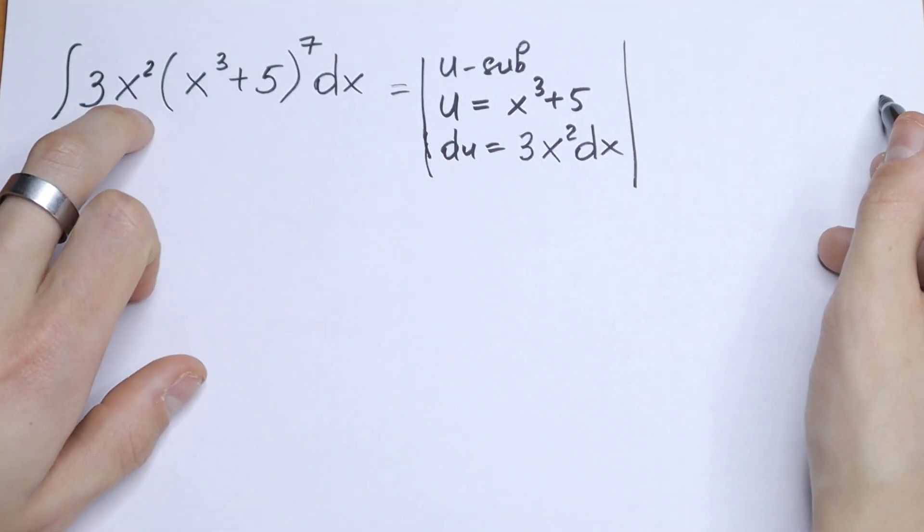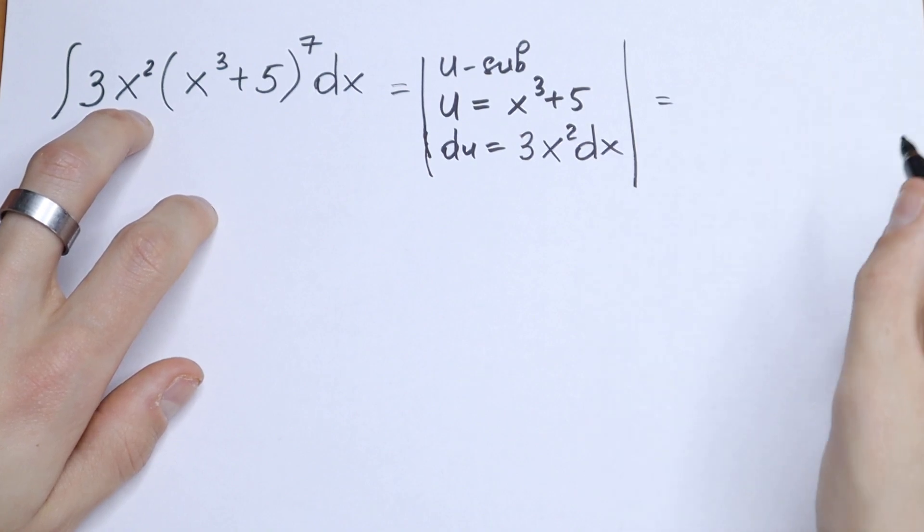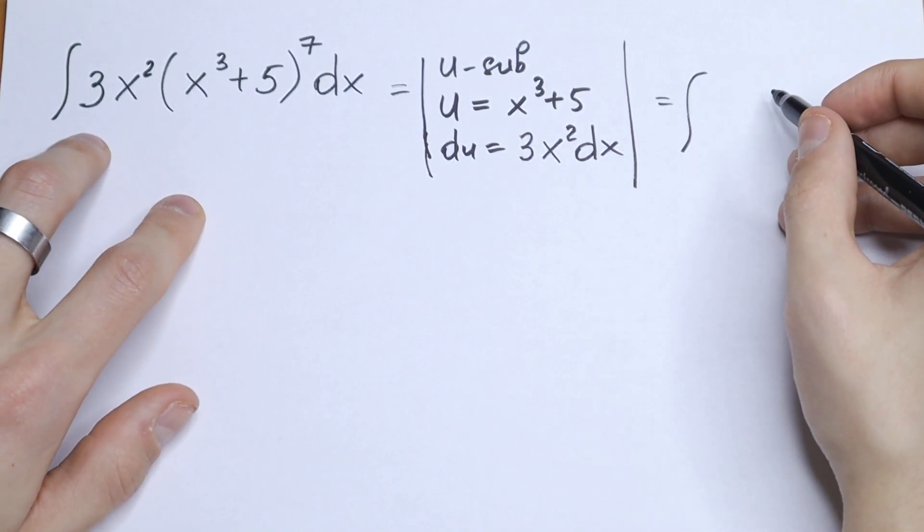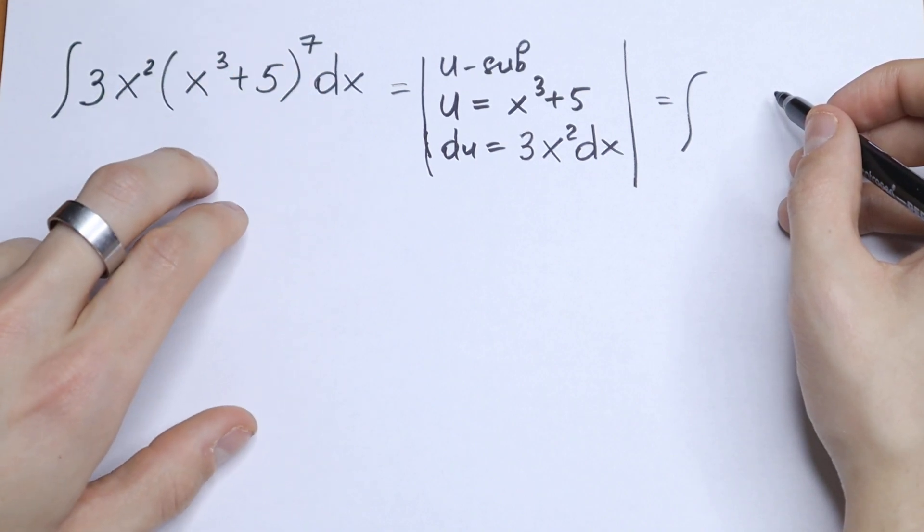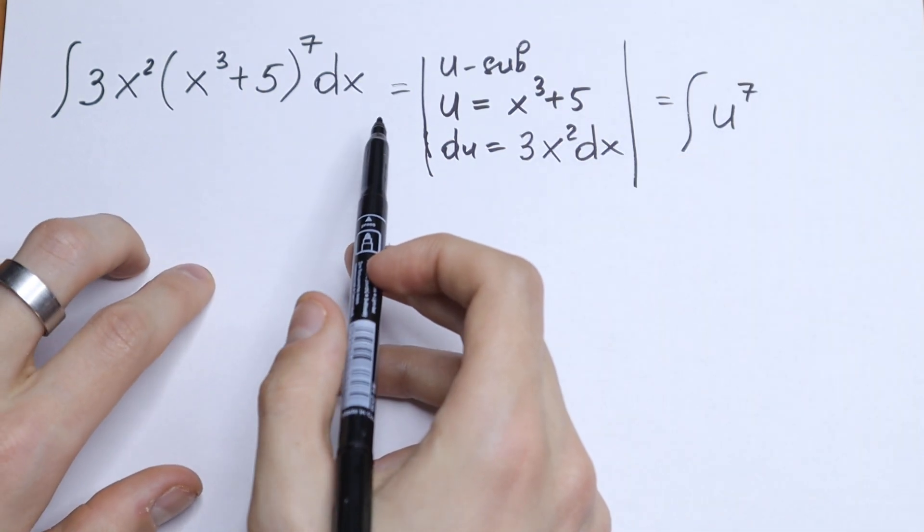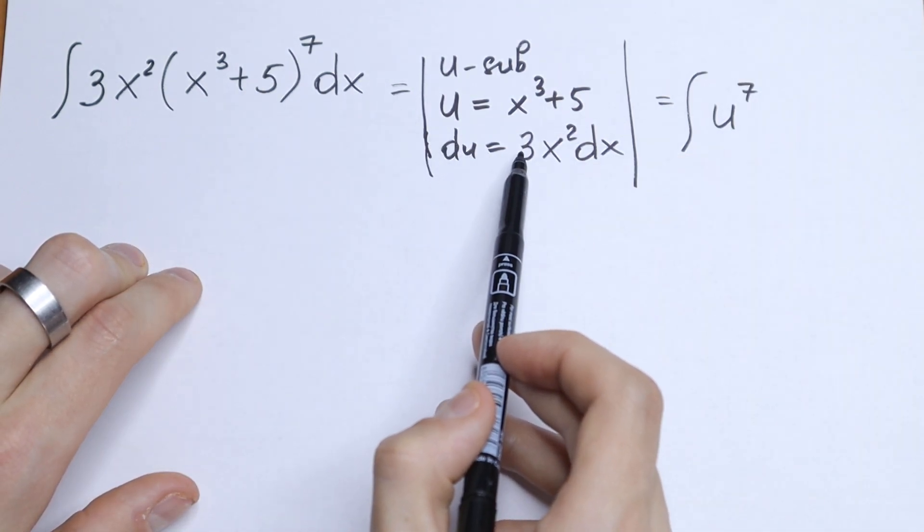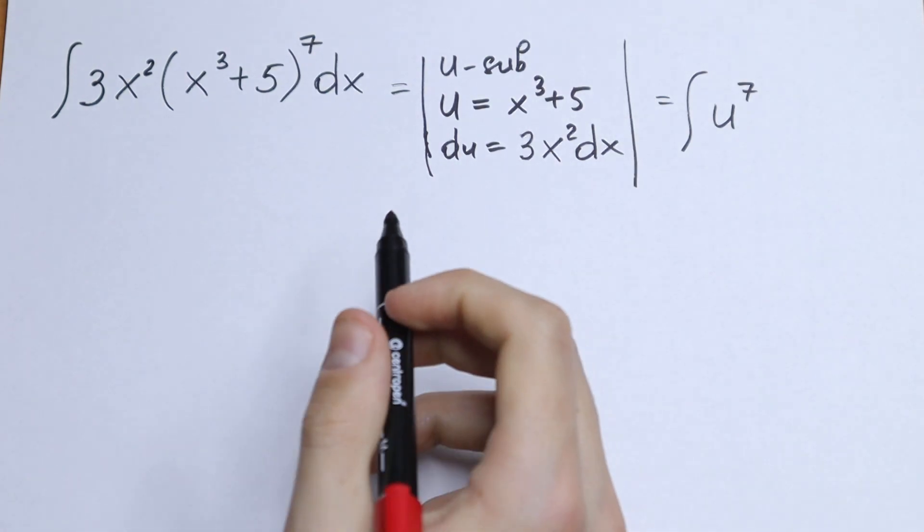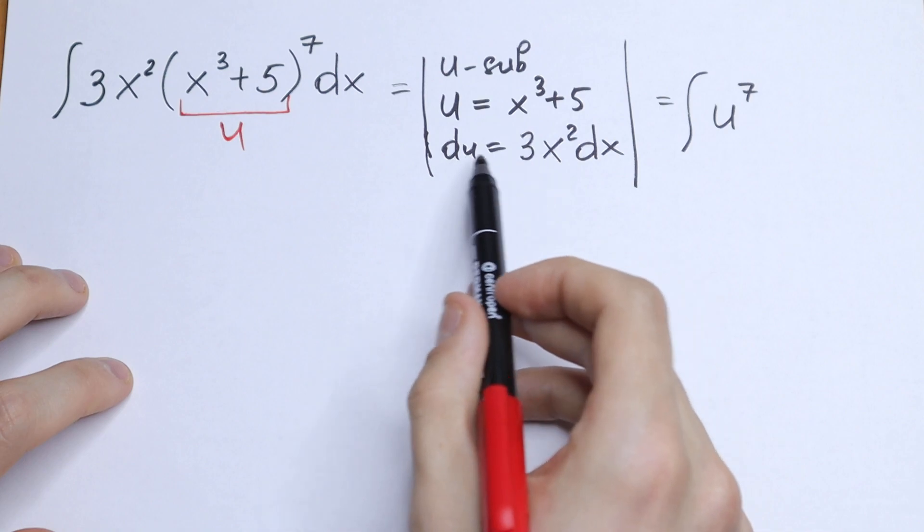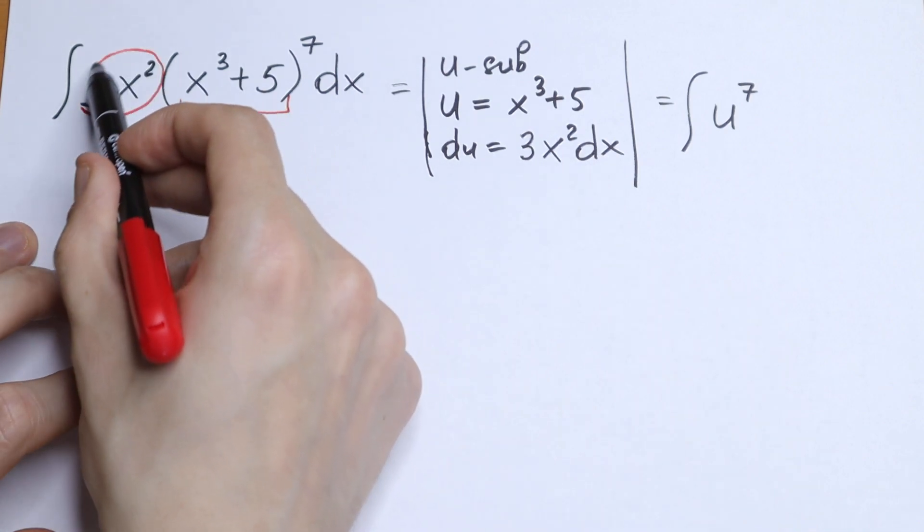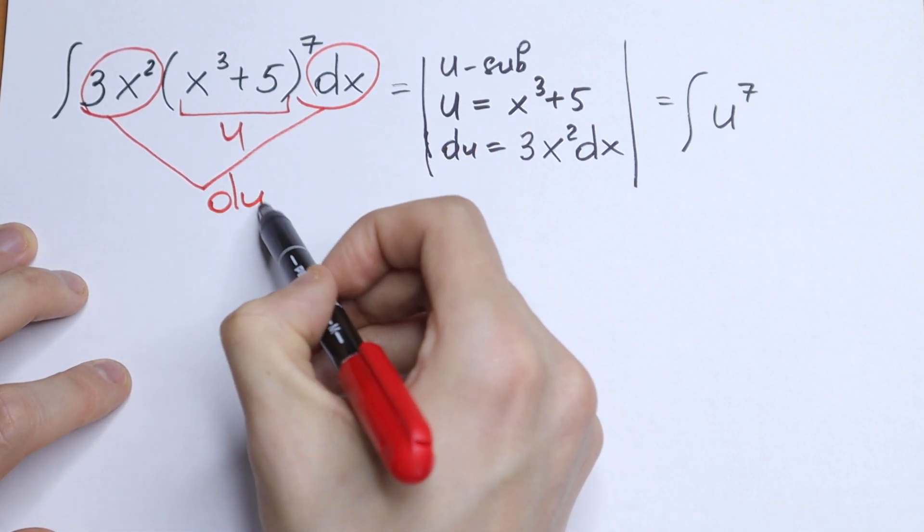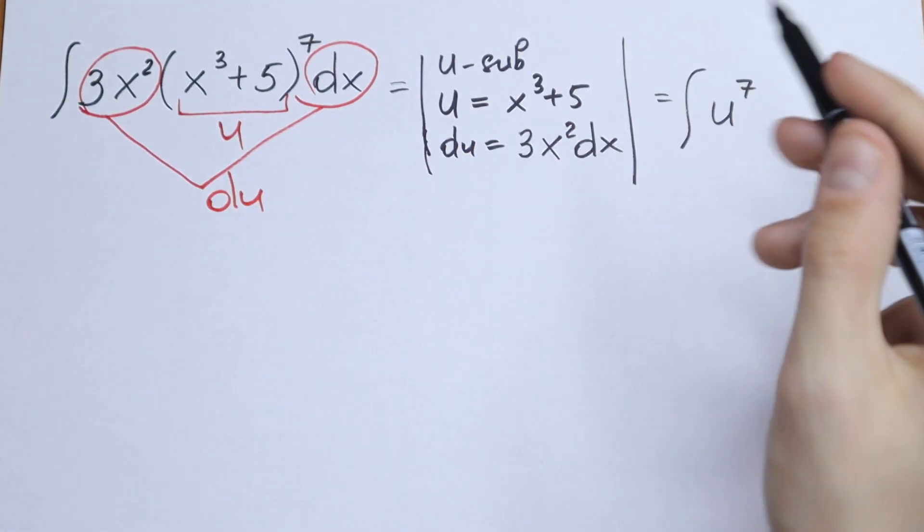Let's plug in this substitution right here. And what we will have? This will be equal to integral of the function. We will have that this will be equal to our u to the 7th power. But right here du is equal to 3x squared times dx. So this is our u, and 3x squared times dx, this and this is our du. And we need to write only our du.